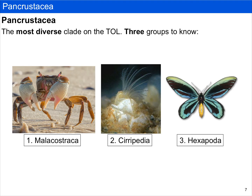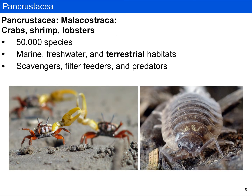I'm going to cover the hexapods in more detail in a separate video, but here I'm going to introduce their main features. Let's first look at the malacostracans, which includes crabs, shrimp, and lobsters. There are about 50,000 species and they occupy marine, freshwater, and terrestrial habitats. Given their diversity, it should be no surprise that they also occupy a wide variety of ecological niches — many are scavengers, some are filter feeders, and they can also be predators. Although you usually think of crabs and shrimp and lobsters when you think of malacostracans, there are also many terrestrial forms, including things like isopods or roly polies.